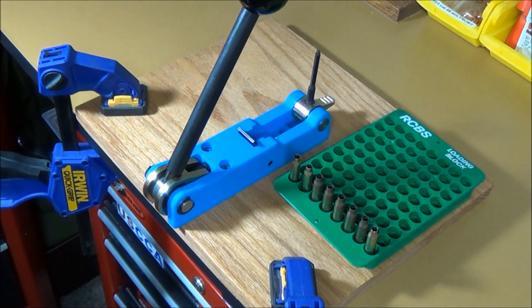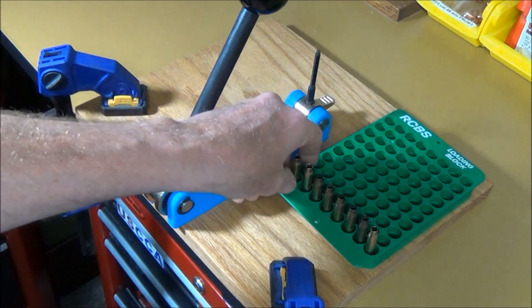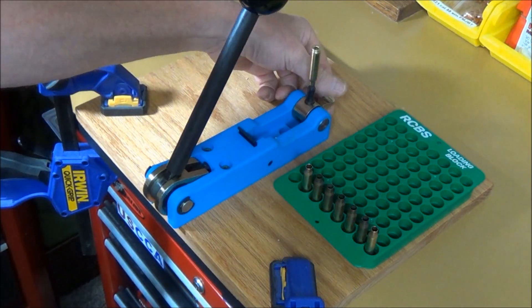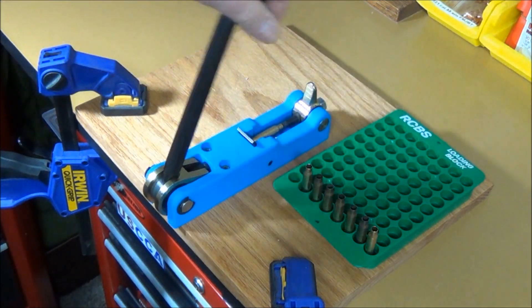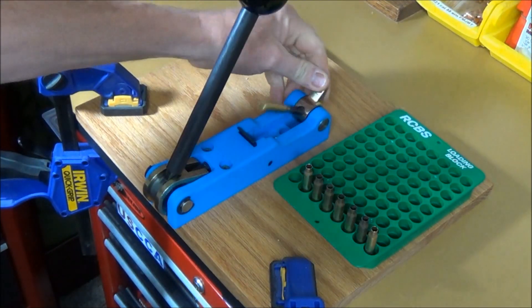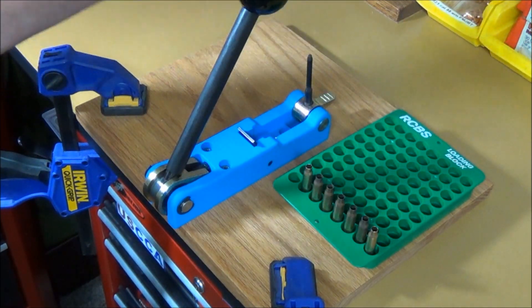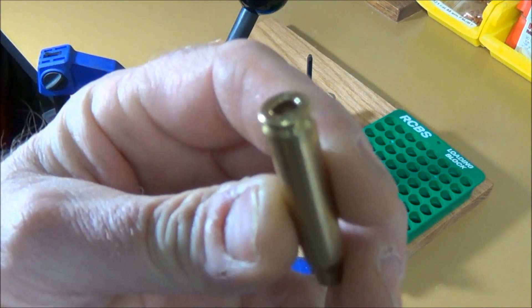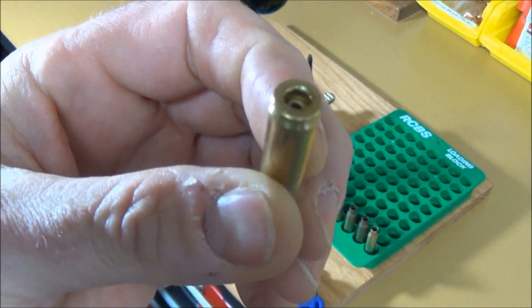Now that we have the cases deprimed and we've got them cleaned, we're going to set them on the Dillon Super Swage 600. Set them on the support rod, fold it down into the cradle, simply depress the lever. And what you get is a nicely rounded out chamfered primer pocket.